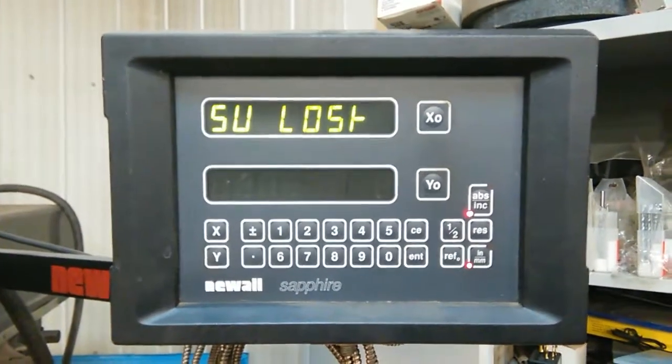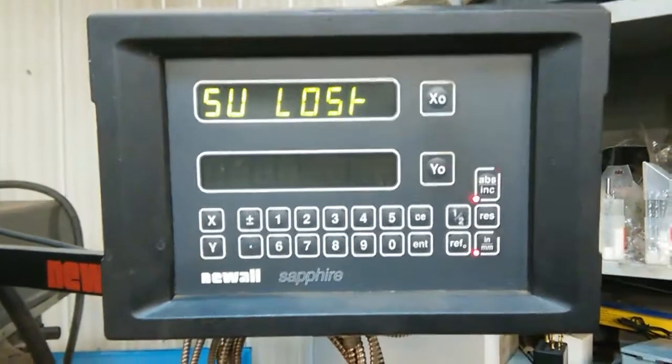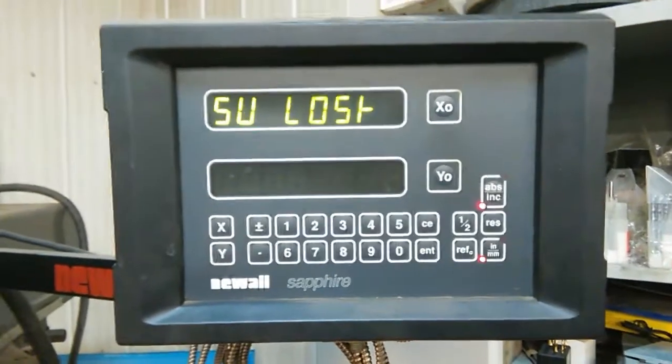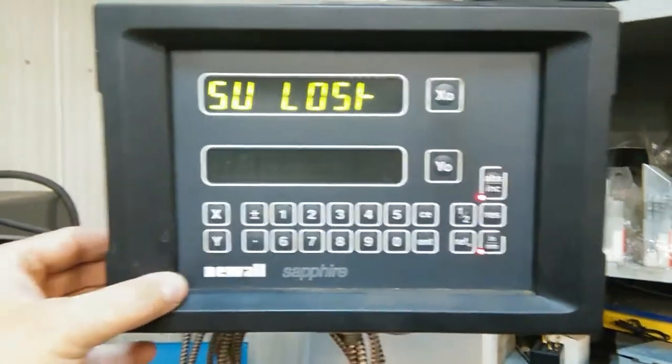It gives this message, SU LOST or something. You can't do anything - you can move the table, it doesn't do anything. You try pressing all these buttons, it doesn't do anything. There's a hidden button right here.